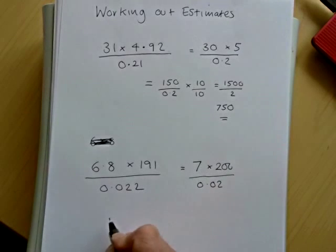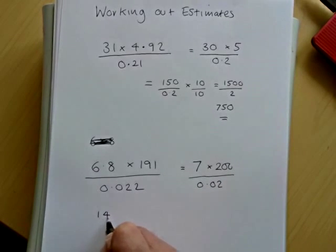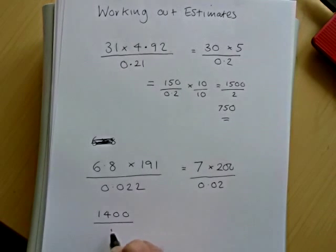So 7 times 200 is 1400. So it's 1400 over 0.02.